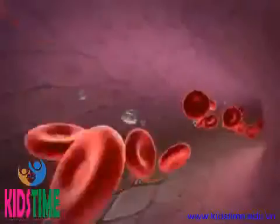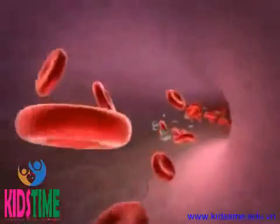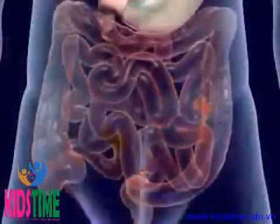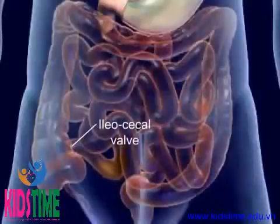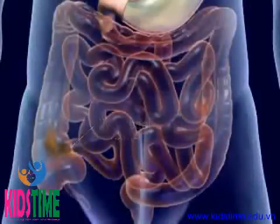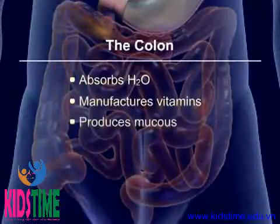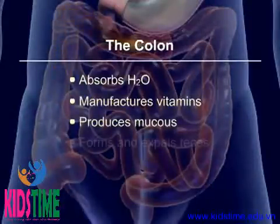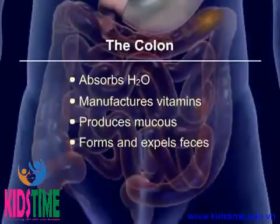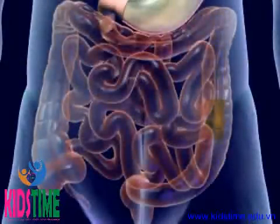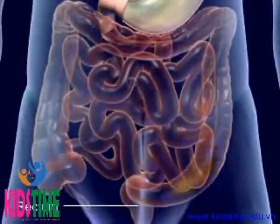The nutrients are now transported by the blood to all the cells of the body. The undigested food reaches the ileocecal valve and enters the large intestine, or colon. The colon absorbs water, manufactures vitamins, produces mucus, and forms and expels feces. Mass peristalsis pushes the feces into the rectum, which stimulates the defecation reflex.